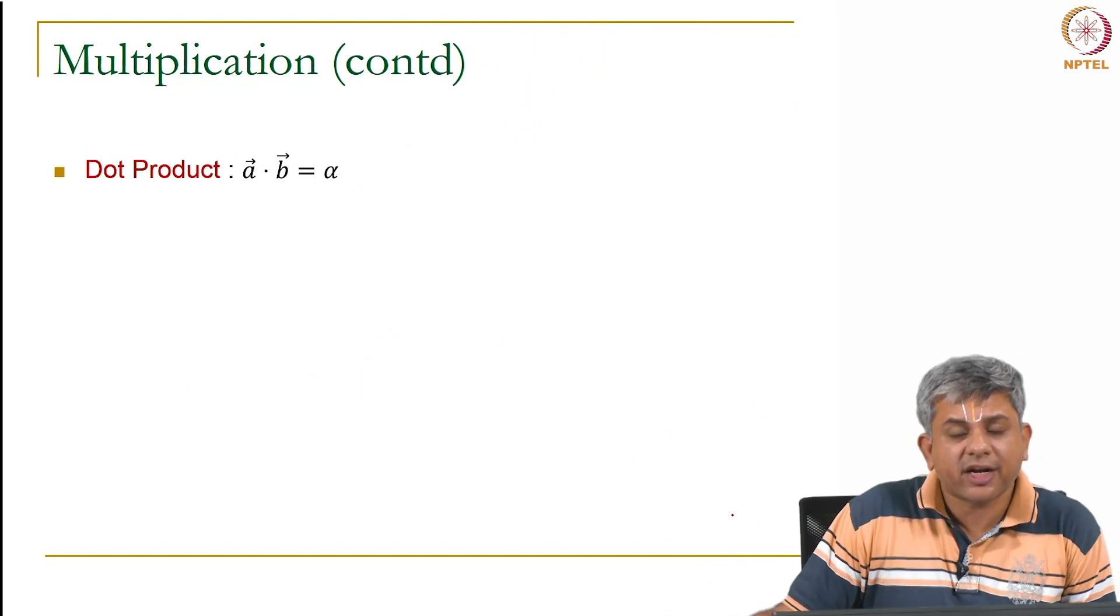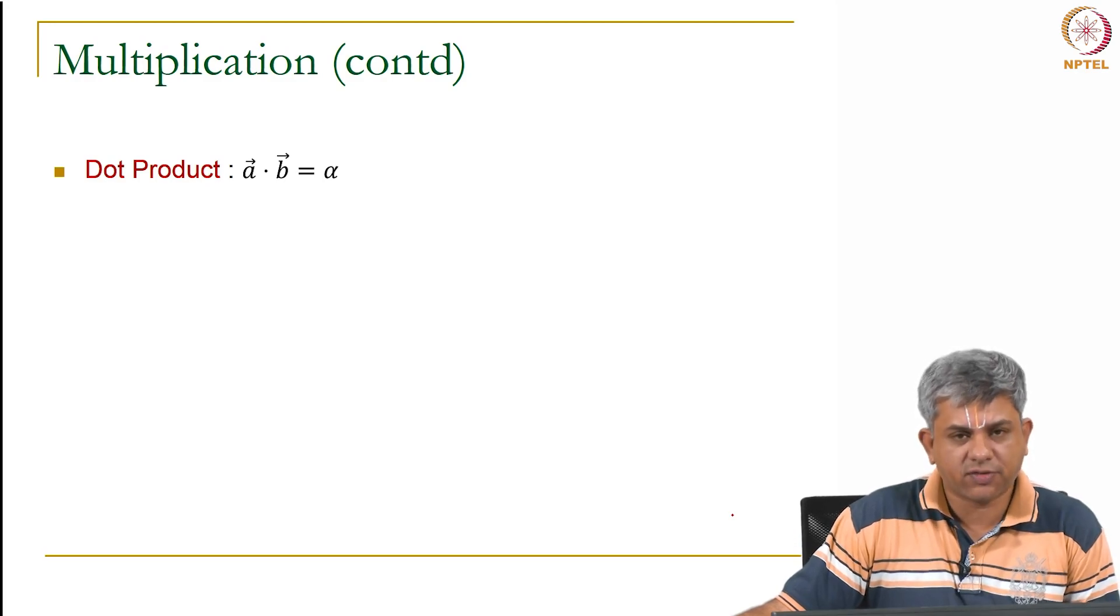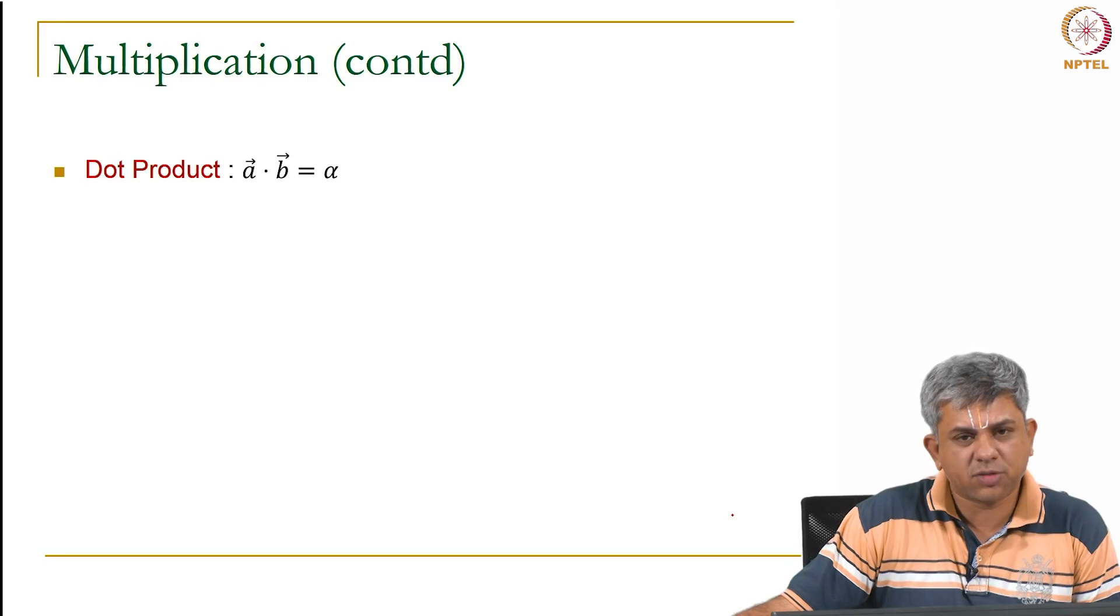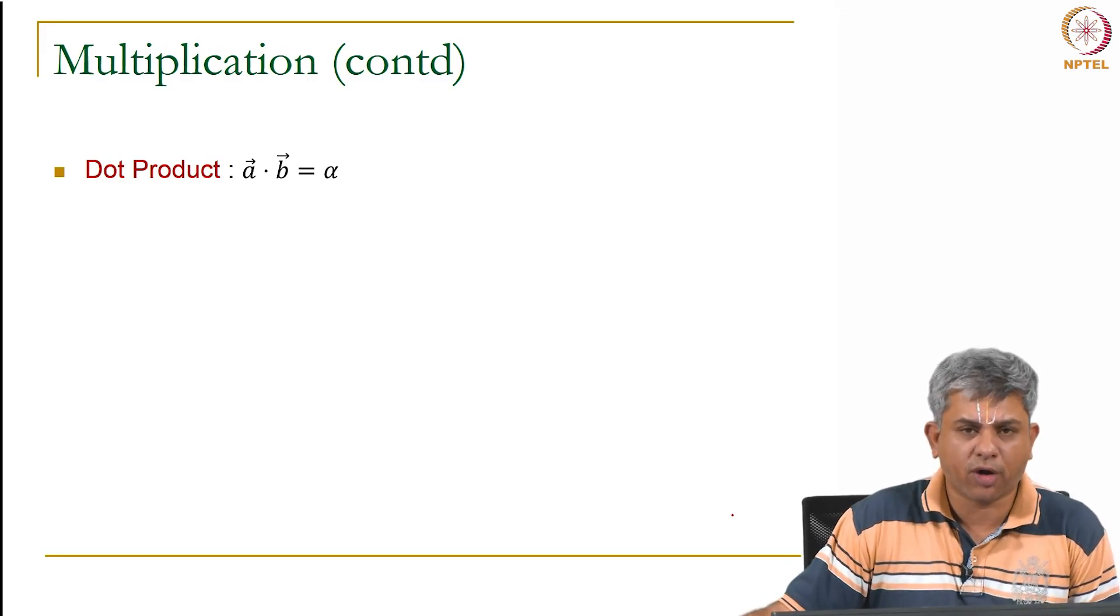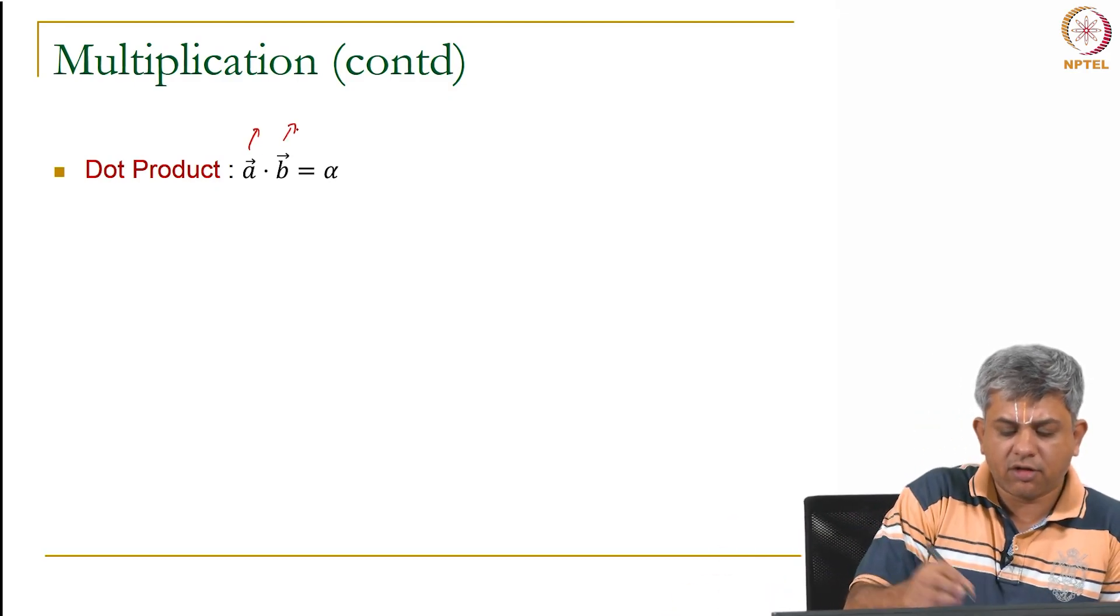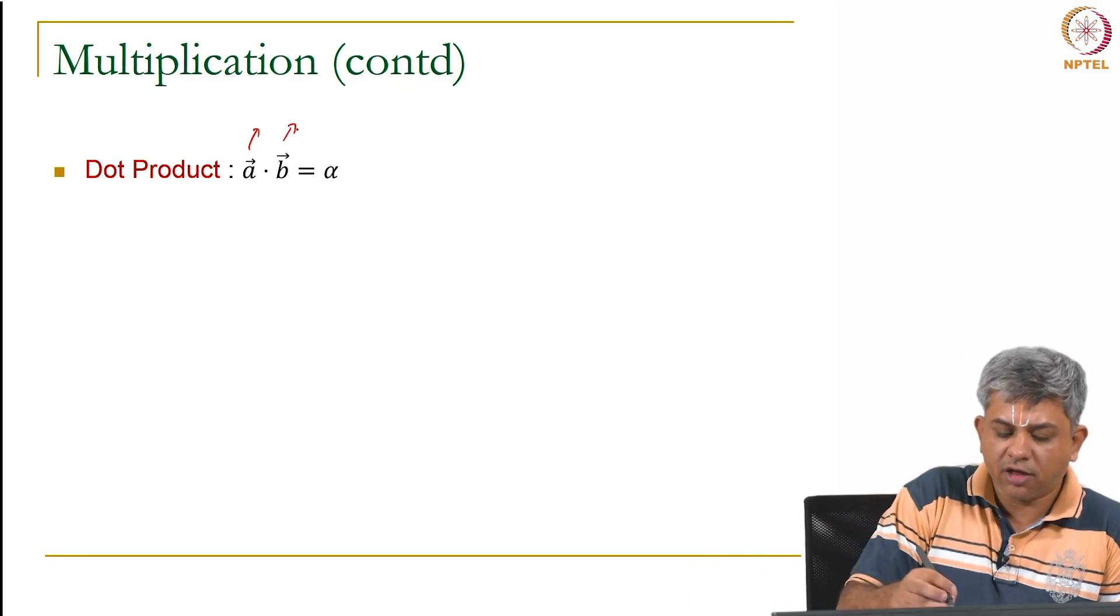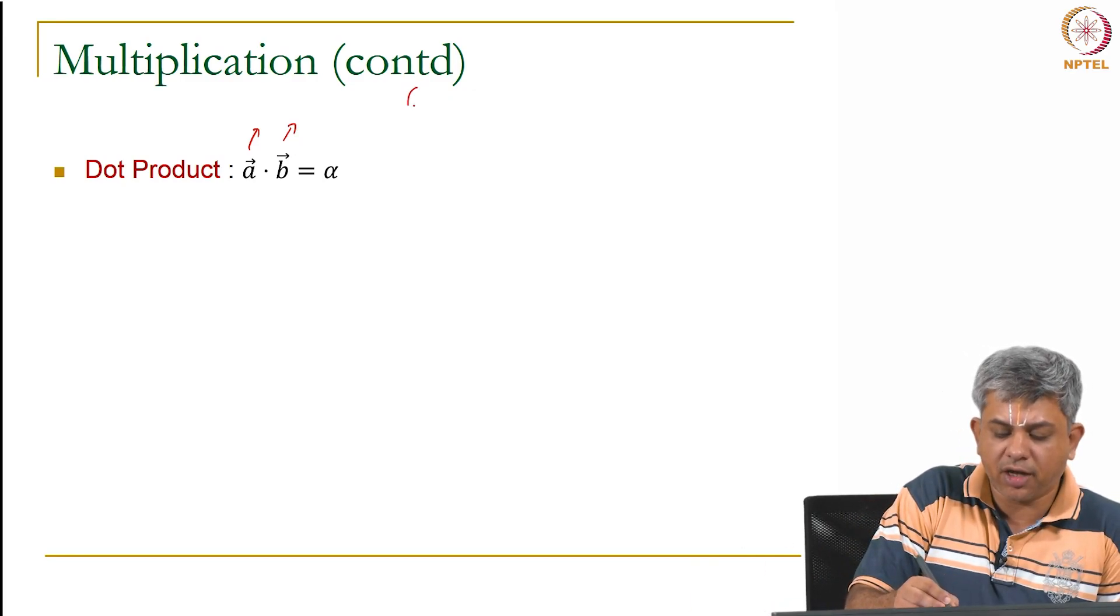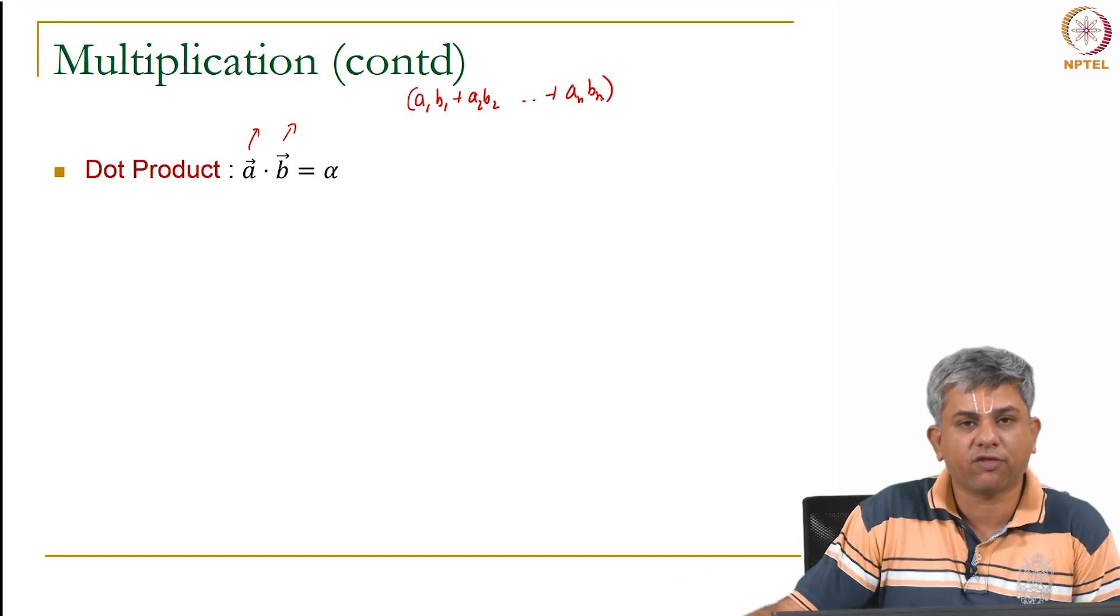Finally we have the vector product. We are not going to look at cross products really as far as this course is concerned, that comes more in physics. In machine learning usually we are dealing with dot products. So a dot product you remember is the product simply between two vectors which gives you a scalar. We know that this dot product simply is a_1 b_1 plus a_2 b_2 and so on and so forth up till a_n b_n. Of course the assumption is A and B are of the same size.